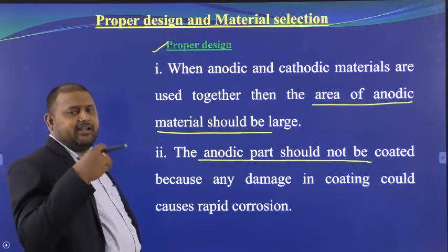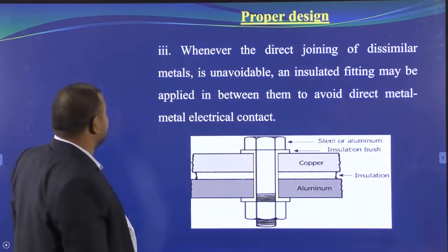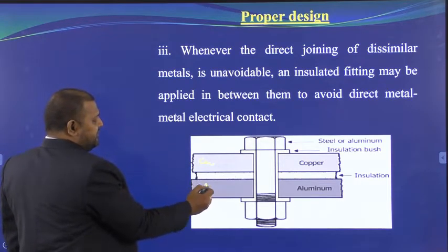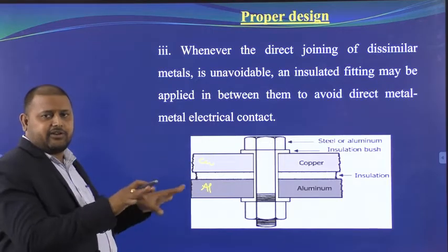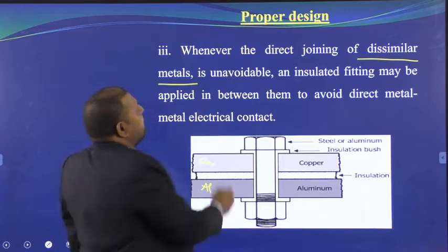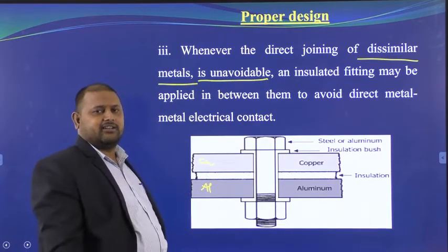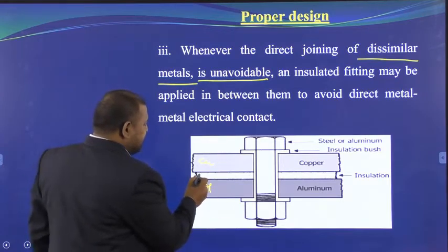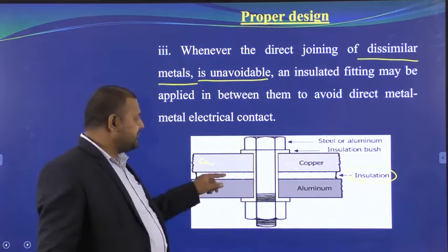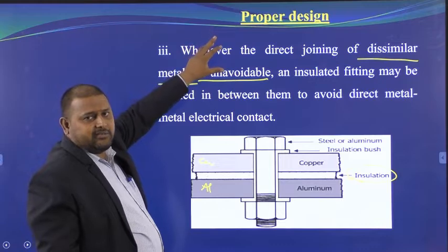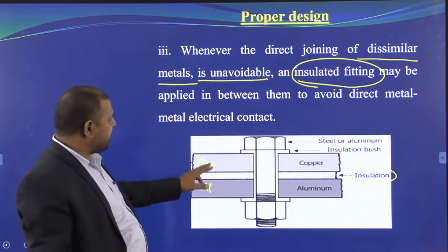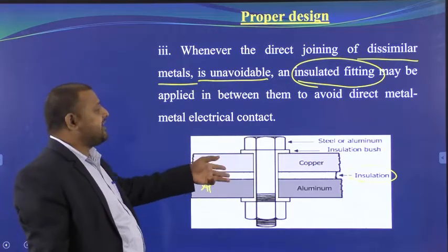Whenever joining two different metals, generally avoid using two dissimilar metals. If it is unavoidable, use an insulated fitting between them to avoid direct contact. For example, joining copper and aluminum — place insulated washers between them. Since there is no direct contact, current cannot pass, the reaction is incomplete, and the metals are protected.